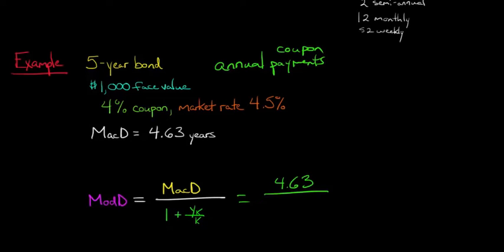Now we're going to say that we've got compounding annually. So we've got 1 plus our yield, which is just our market rate of interest, right? That's 0.045, and that is going to be divided by our K, which is how often we're compounding. We're compounding once a year, so we divide by 1. That's going to give us 4.63 over 1.045.